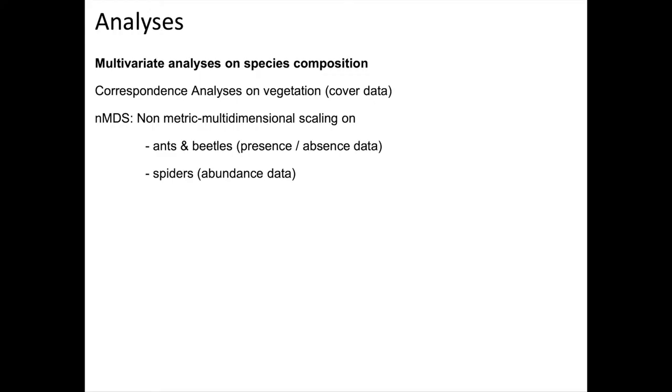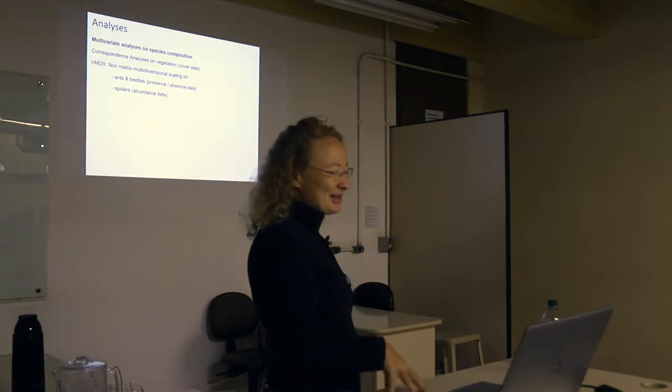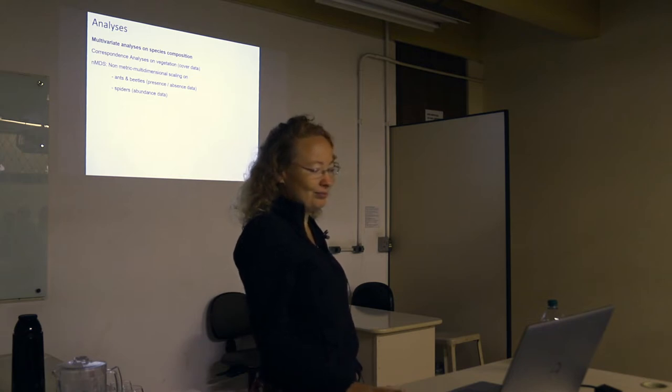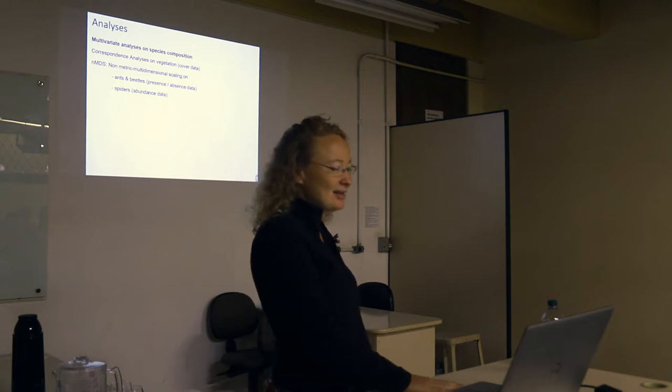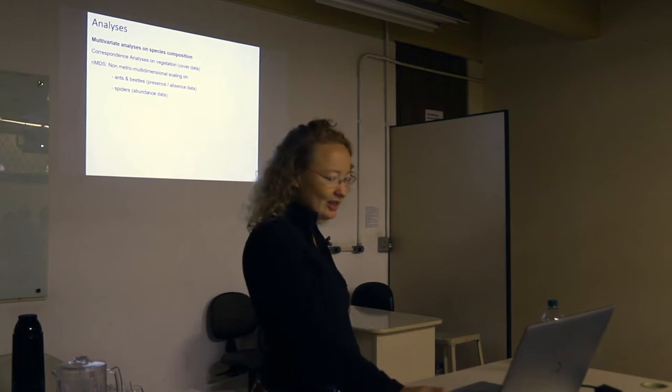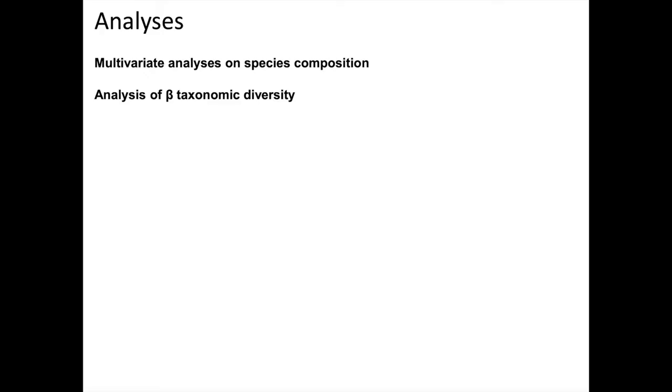For the analysis we carried out lots of analysis, but I'm going to show you just the multivariate analysis on species composition. For the vegetation, there are correspondence analysis on cover data. And for the arthropods, there are non-metric multidimensional scaling nMDS, either on presence-absence data or abundance data. Then I'm going to show you analysis of the beta taxonomic diversity between years.